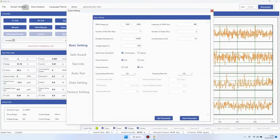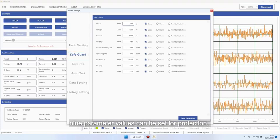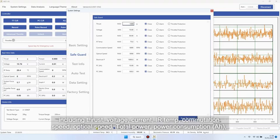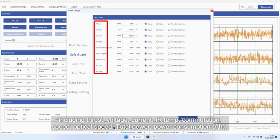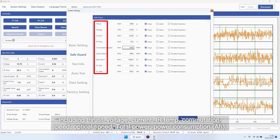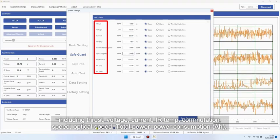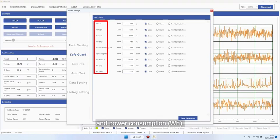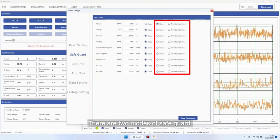In the safeguard, 9 parameter values can be set for protection, including thrust, voltage, current, IR temp, commutation speed, optical speed, total power, and power consumption. There are two modes of safeguard.